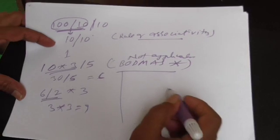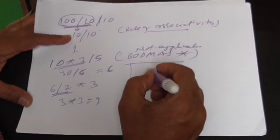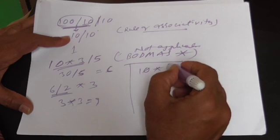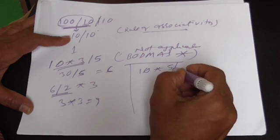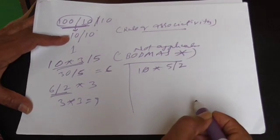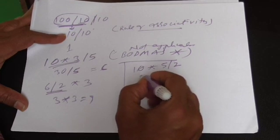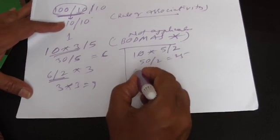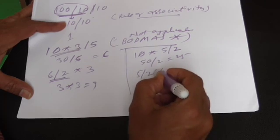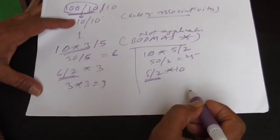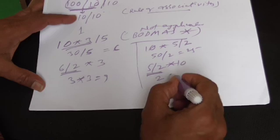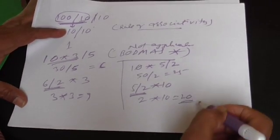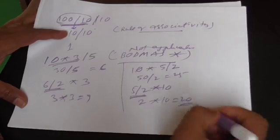If you look at another example, where I say 10 into 5 by 2. So 10 into 5 is 50. So 50 by 2, you will get 25. But if you write 5 by 2 into 10, first division is performed. 5 by 2 is 2, 2 into 10, you will get 20. This is what, very important for you to understand.